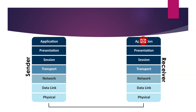The Data Link layer handles delivery to the next device without errors, and the Physical layer puts the data onto the medium for transport. On the receiving end, data starts at layer one and works its way back up to layer seven, where it reaches the user.